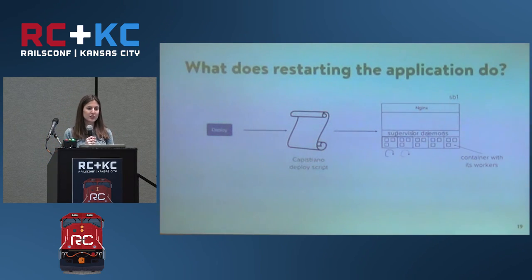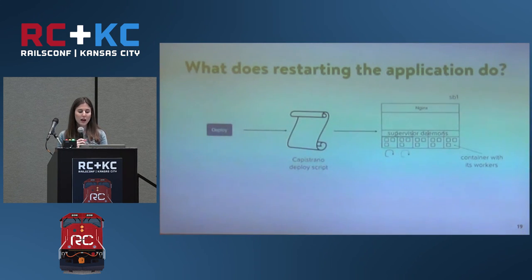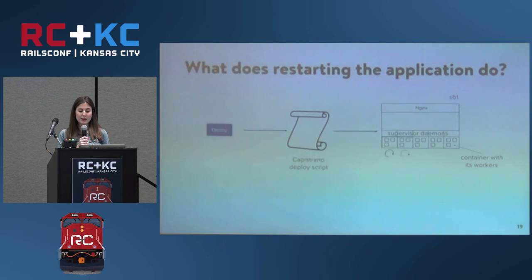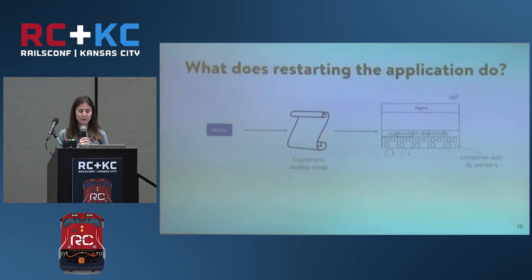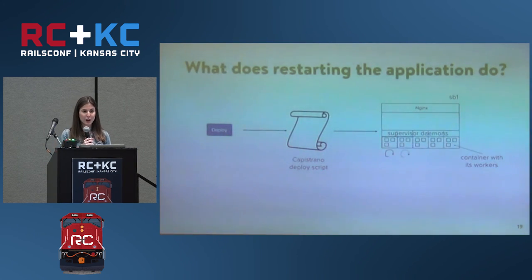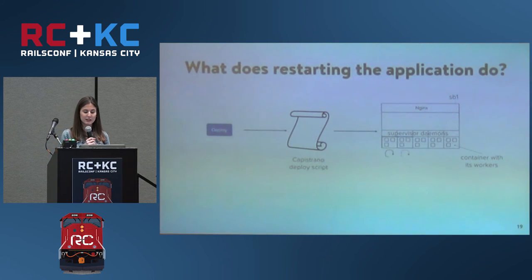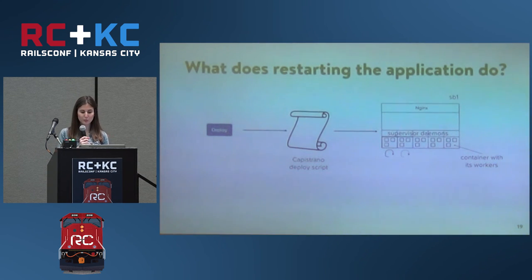As mentioned, sometimes the solution is to restart the application. When you press deploy, the Capistrano script runs and puts the new revision SHA into the revision file on the server, which the supervisor daemons then get, and they restart all the containers with that SHA. When you do a restart, they already have the new SHA, so they know what to do. All they do is start at the step of restarting the containers — they restart all containers that still require the new SHA and continue the deploy from there.